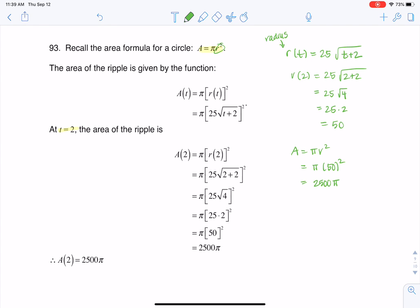If I want to actually find area as a function of time, instead of r of t, I'm going to write our particular function, which was 25 square root of t plus 2. And then here you see me actually plugging in the t value of 2, working all that arithmetic and winding up with 2,500 pi.